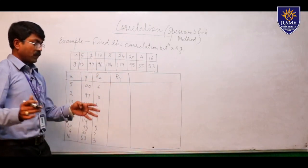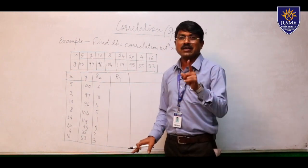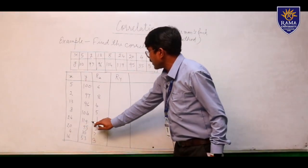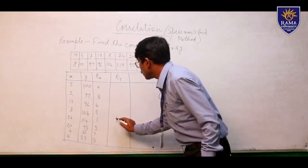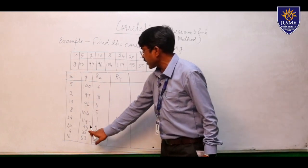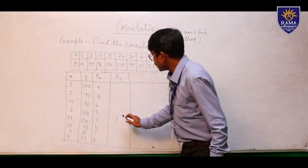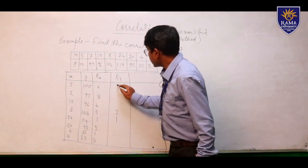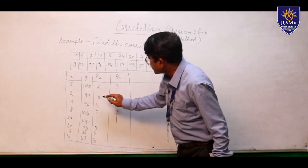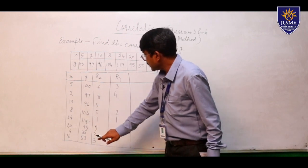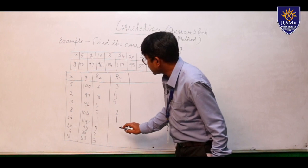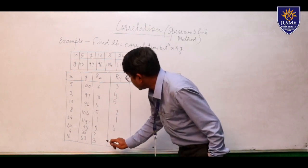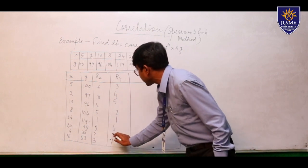Same process for the y variable — find the biggest value and assign the rank. 119 is the biggest, so rank 1. Then 104 is rank 2. Then 100 is rank 3. Then 97 is rank 4. Then 96 is rank 5. Then 95 is rank 6. Then 53 is rank 7. And 35 is rank 8.